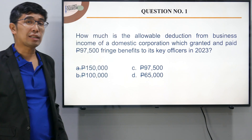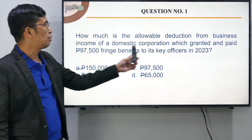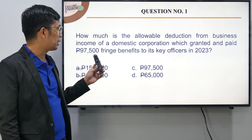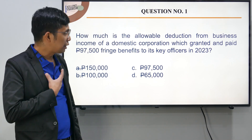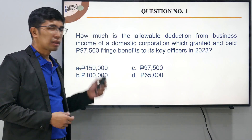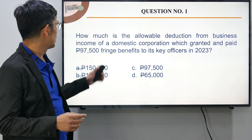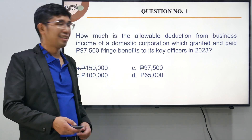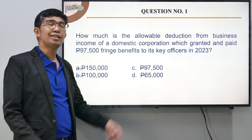Let's illustrate. The problem asks: how much is the allowable deduction from the business income of a domestic corporation which granted and paid $97,500 in fringe benefits to its officers in 2023? To simplify: I am the employer — a domestic corporation — and I paid $97,500 in fringe benefits to my executives. The question is: how much is the allowable deduction for the employer?